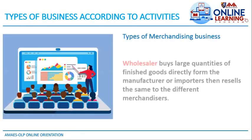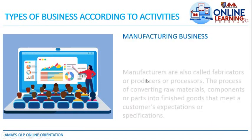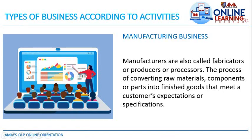There are two types of inventory. First, the wholesaler, which buys large quantities of finished goods directly from manufacturers or importers and resells them to different merchandisers — like stores in Divisoria that buy large quantities from China or other parts of the world and sell to retailers. Second, the retailer, who sells goods directly to the end customer — such as convenience stores, sari-sari stores, or online sellers.